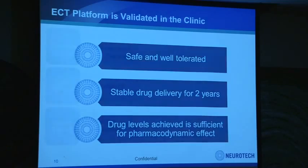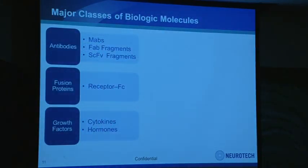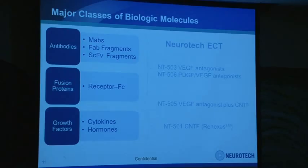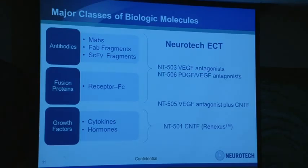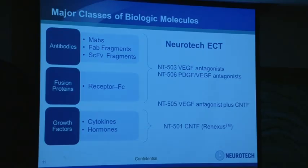I'm going to show data from our collaboration with UCSF and UC Berkeley. What major classes of molecules can this technology deliver? We've been successful in engineering cell lines to produce various kinds of antibodies, receptor-FC molecules such as VEGF-trap-like molecules, and cytokines and hormones. We have current clinical studies for NT503 for wet AMD and NT506, which is anti-PDGF in combination with NT503 for better efficacy. But today I'm focusing on NT501, which is the CNTF program.